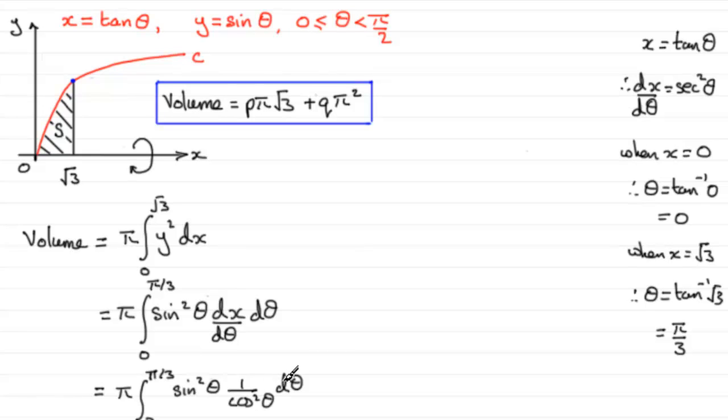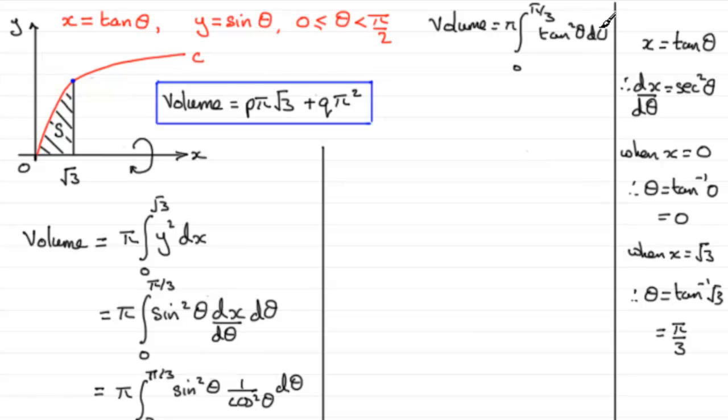Right, so we just need to tidy this up. So we've got the volume equals pi times the integral then from naught to pi upon three of sine squared theta over cos squared theta, which is the equivalent of tan squared theta. So we're integrating tan squared theta with respect to theta.